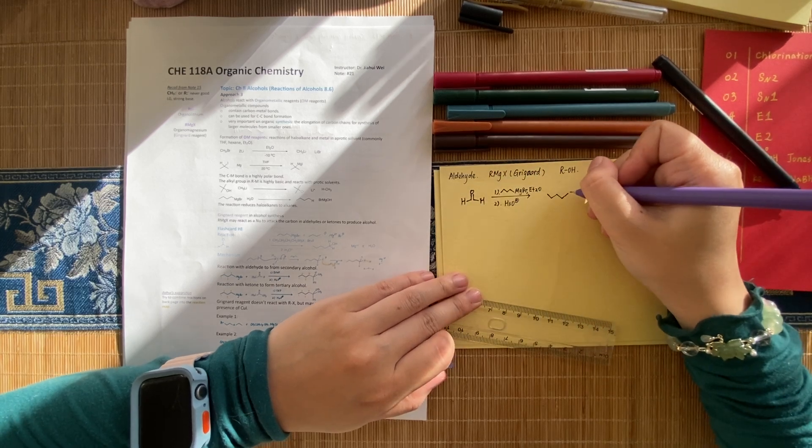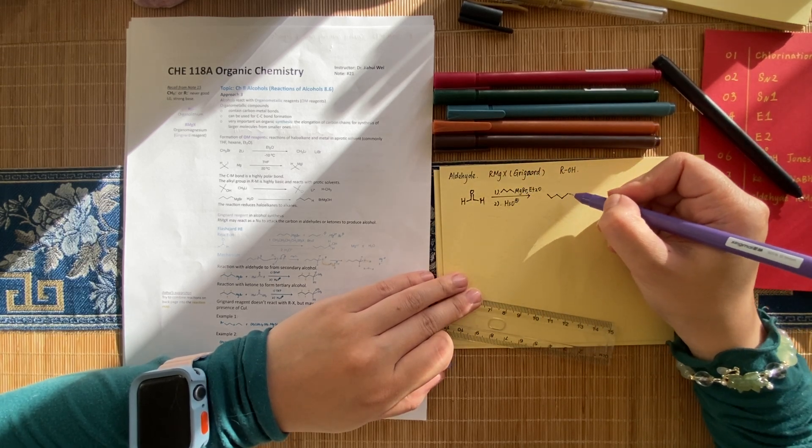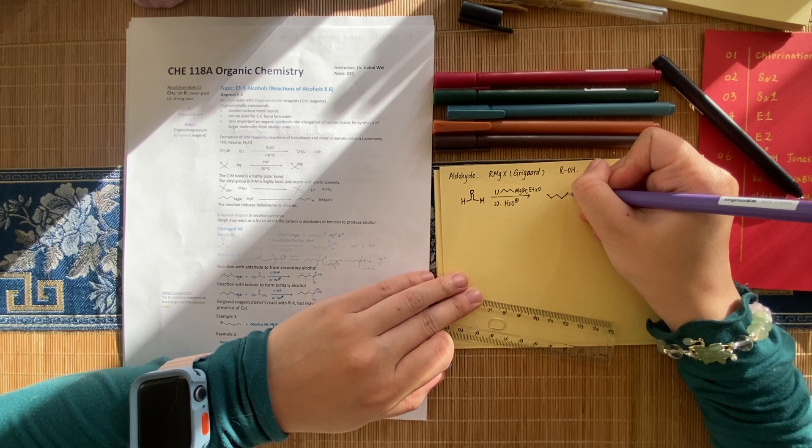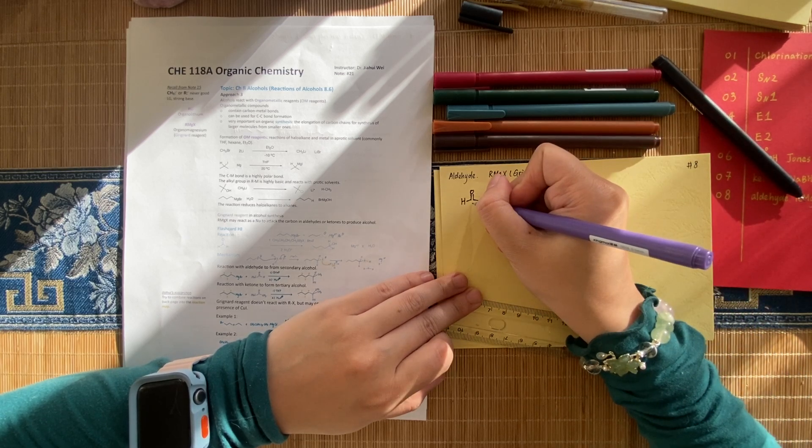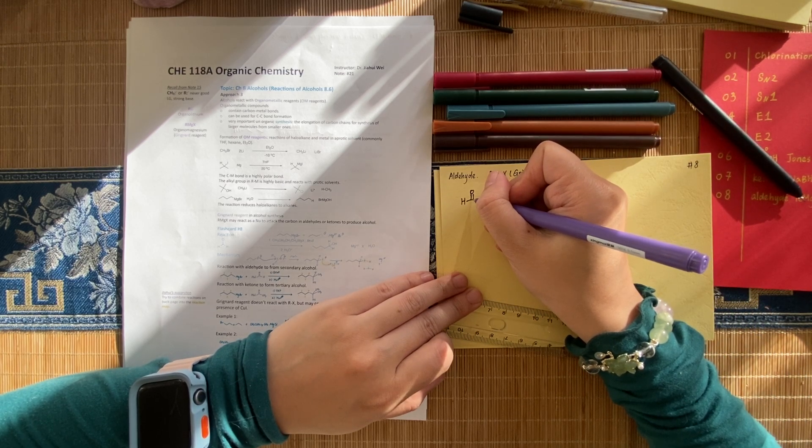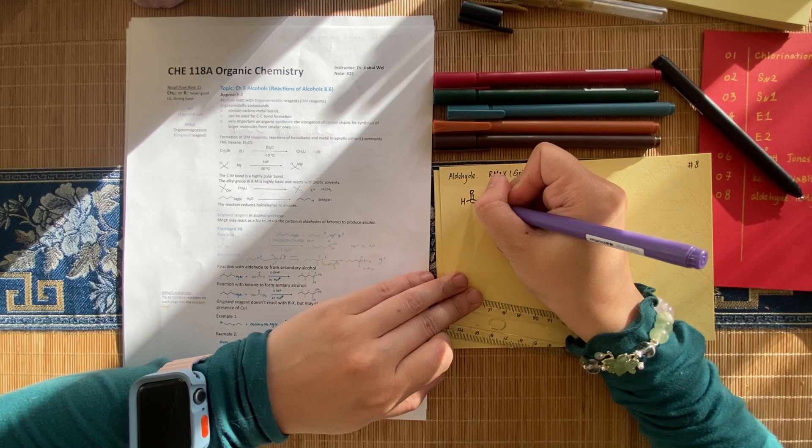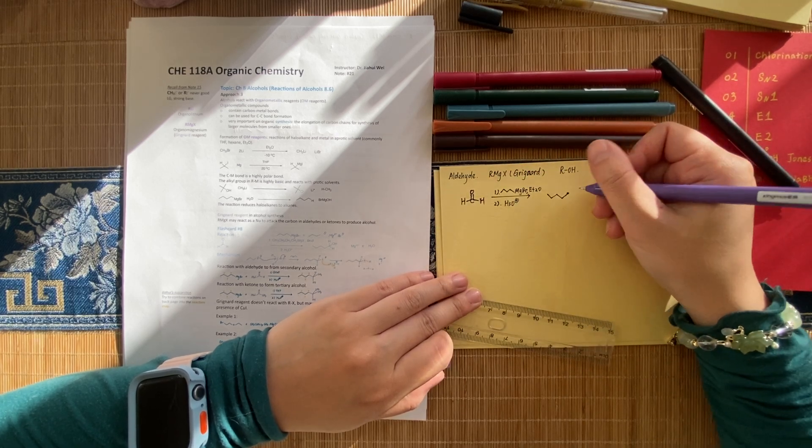This carbon. So one, two, three, four. One, two, three, four. Which means this number five carbon is this center carbon. This C here. This carbon. This number five.